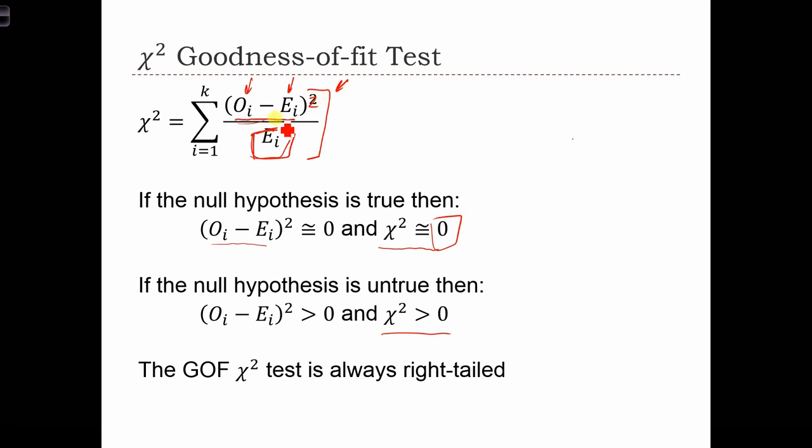So if there's a big difference, the square will be big and positive, and therefore the sum over all of these differences will be positive.